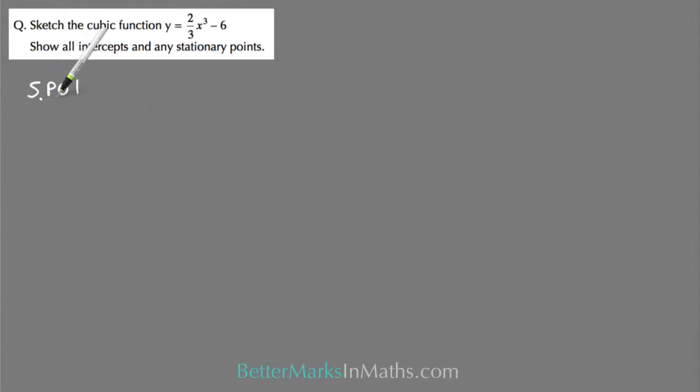So again first step find the stationary point of inflection. Because that's just x cubed, that's really x minus or x plus zero in a bracket cubed, so the value of x that would make that bracket zero would be zero, and then the number at the end here is minus 6. So the stationary point of inflection is at 0 comma minus 6.